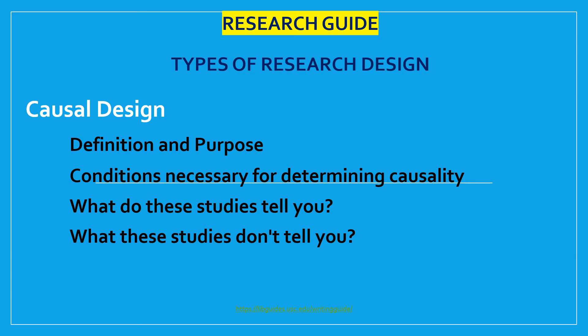What causal design tells you: Causality research design assists researchers in understanding why the world works the way it does through the process of proving a causal link between variables and by eliminating other possibilities. Replication is possible for causal design. And there is greater confidence the study has internal validity due to the systematic subject selection and equity of groups being compared.